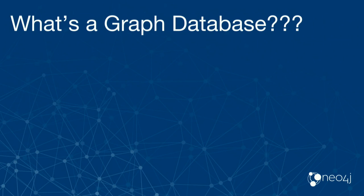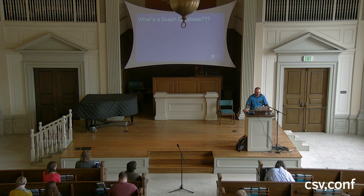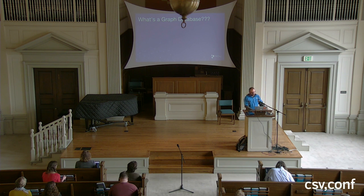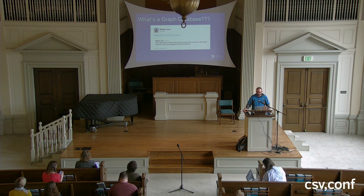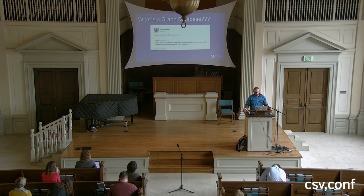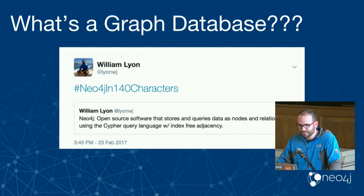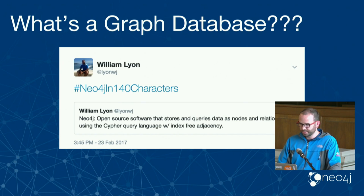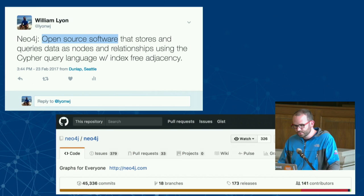For those of you not familiar with graph databases or Neo4j, let's talk about what a graph database is. I thought the most concise way I could explain this is in 140 characters. So this is Neo4j in 140 characters: Neo4j is an open source software that stores and queries data as nodes and relationships using the Cypher query language with index-free adjacency. That's 140 characters, but there's a lot in there, so let's break that down.